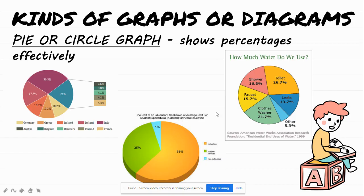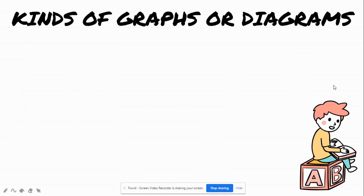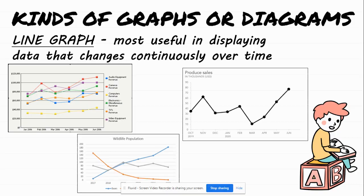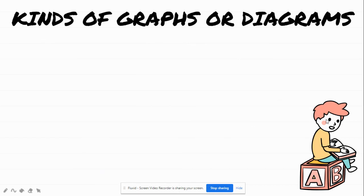Next we have the line graph. The line graph is the most useful tool in displaying data that changes continuously over time and is one of the most widely used graphs. It is used to show the changes in one quantity with respect to another quantity. If your data is changing continuously over time, it is better to use a line graph.